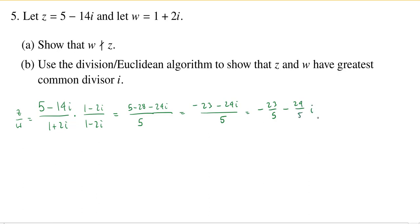Now the important thing in part A is to ask, is this actually a Gaussian integer? Because what would it mean for w to divide z? So w would divide z if there exists some Gaussian integer, call it q, such that w times q is equal to z, or equivalently, q is equal to z over w. So we just computed z over w, and we found that it was not a Gaussian integer.